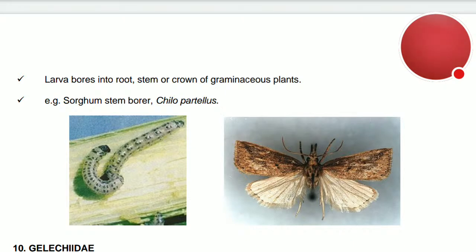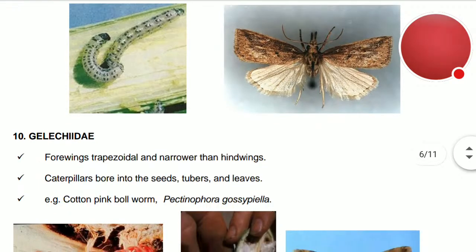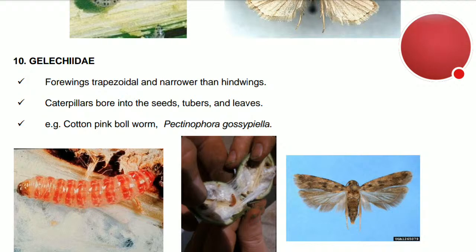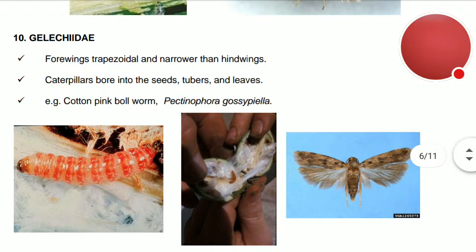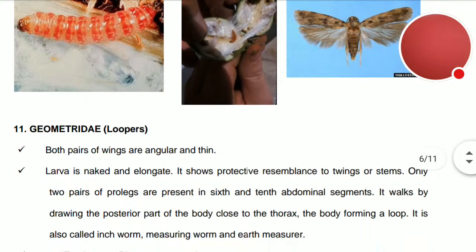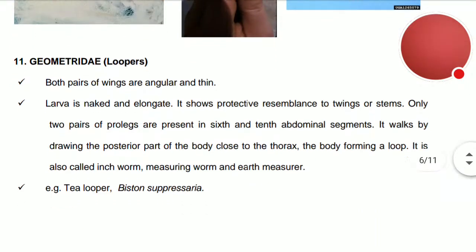Gelechiidae: the forewings are trapezoidal and narrower than the hind wings. The caterpillars bore into seeds, tubers, and leaves. Example: cotton pink bollworm, Pectinophora gossypiella — a very serious pest of the cotton crop.